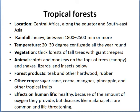The next region is tropical forests, found in Central Africa along the equator and in Southeast Asia. The rainfall is heavy — between 1,800 to 2,500 mm or even more. Because of this heavy rainfall throughout the year, the temperature is very warm, between 20 to 30 degrees centigrade all year round. Thick forests of tall trees with giant creepers are found there. Animals like birds and monkeys live at the top of the trees, also called the canopy, as it creates shade on the earth. Snakes, lizards, and insects are below the canopy. Teak and other hardwoods and rubber are forest products of these regions.